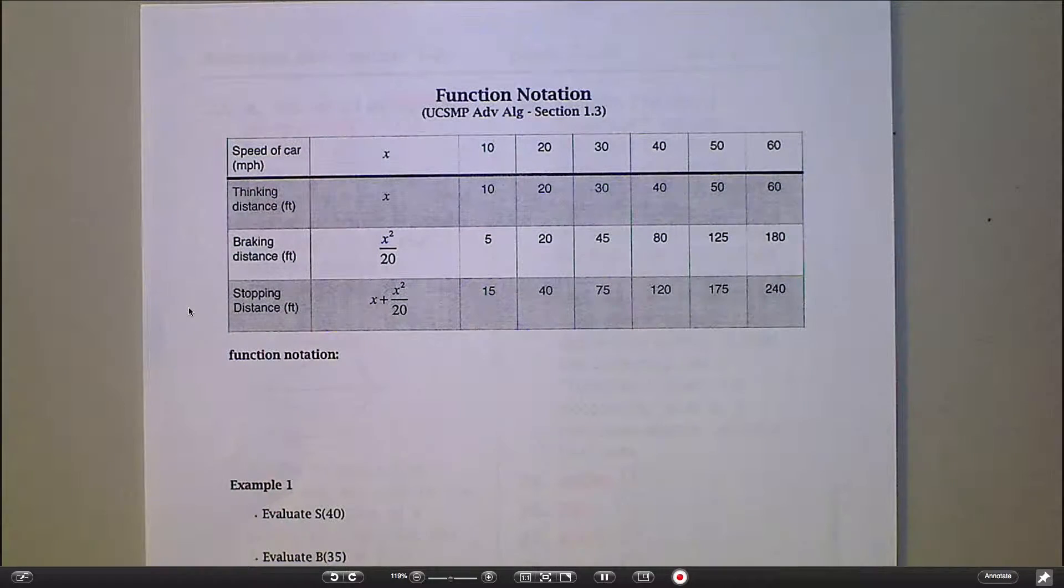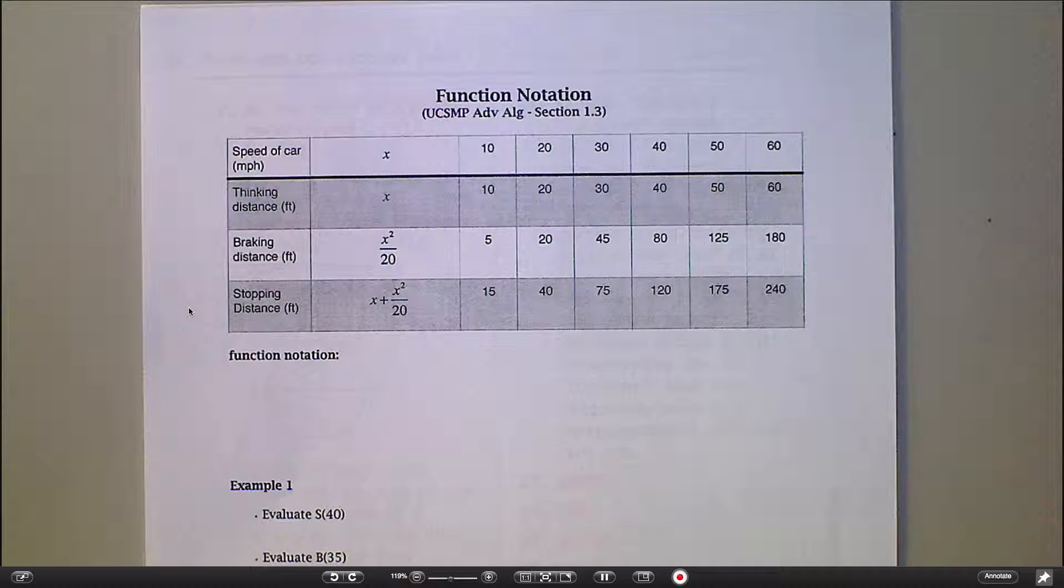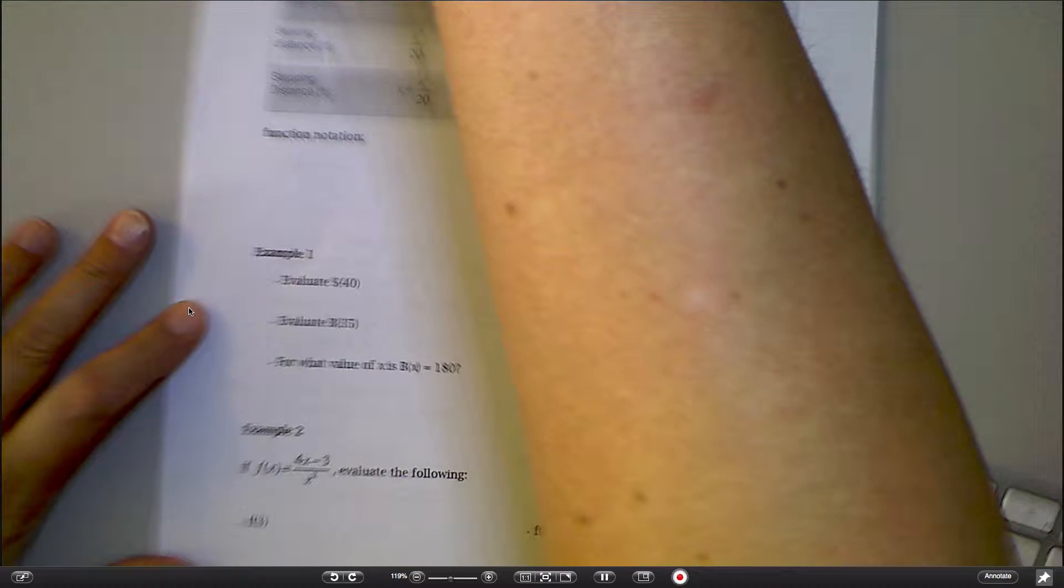Braking distance is from that moment when you realize you better stop and hit the brake - how far will your car travel before it comes to a complete stop? That total stopping distance at the bottom is a combination of the thinking distance and the braking distance. You don't really need to understand why those formulas are the way they are, but this is just what we're using as our example.